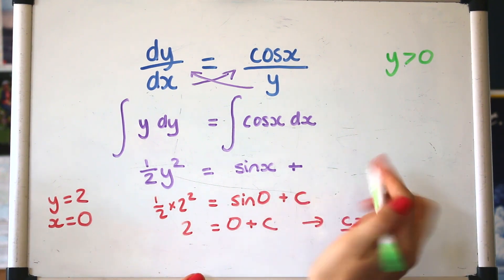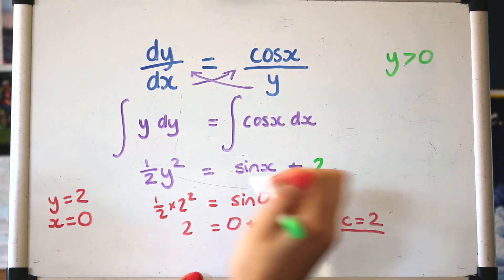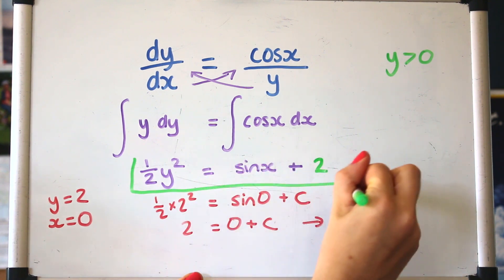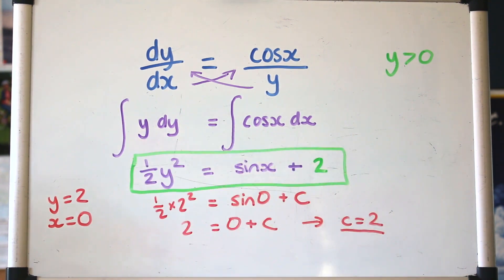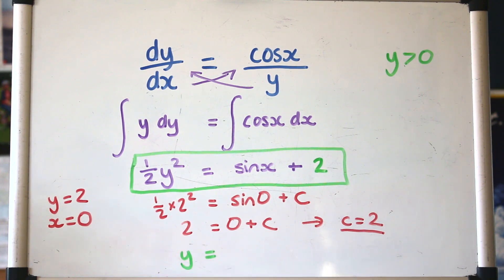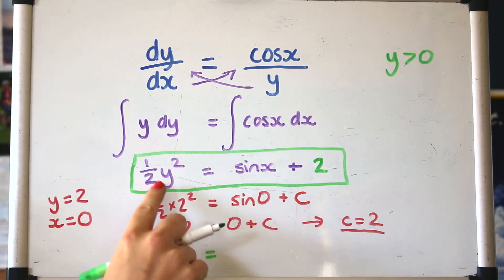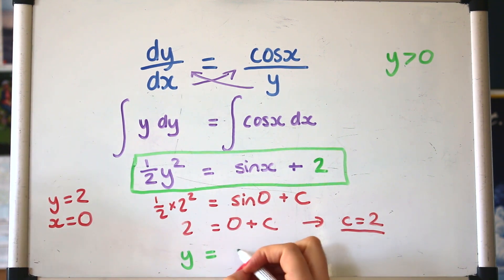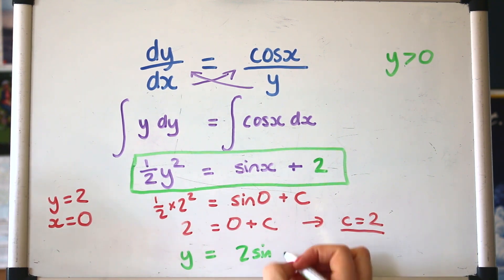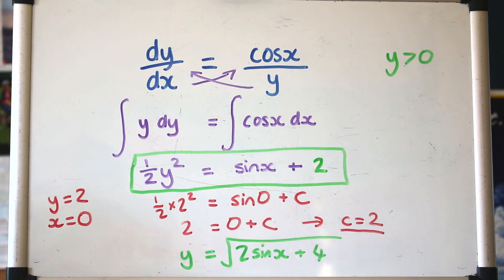And then if we put the 2 back here, then that can now be called the particular solution, and you can even go further if you want and make y the subject on its own and just rearrange it to get rid of the half and the squared, so we can do that. And that is the particular solution to this differential equation.